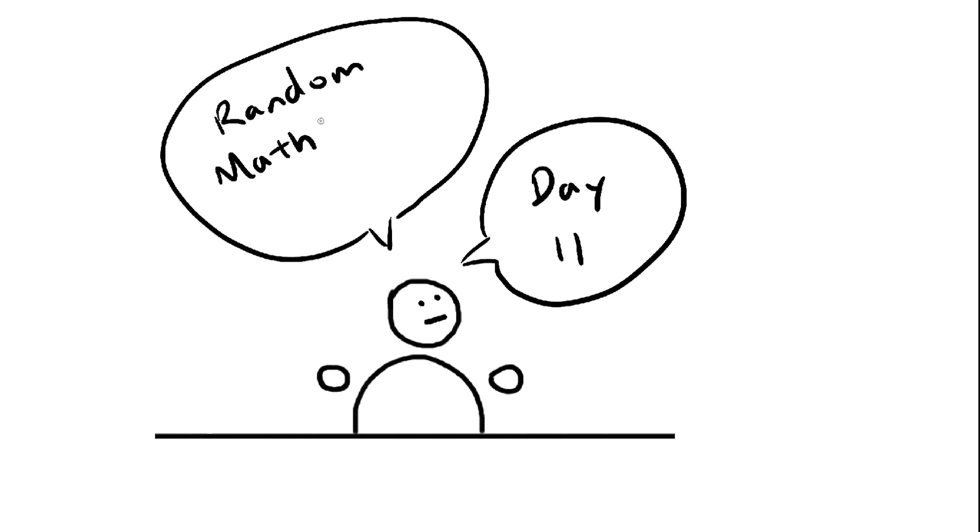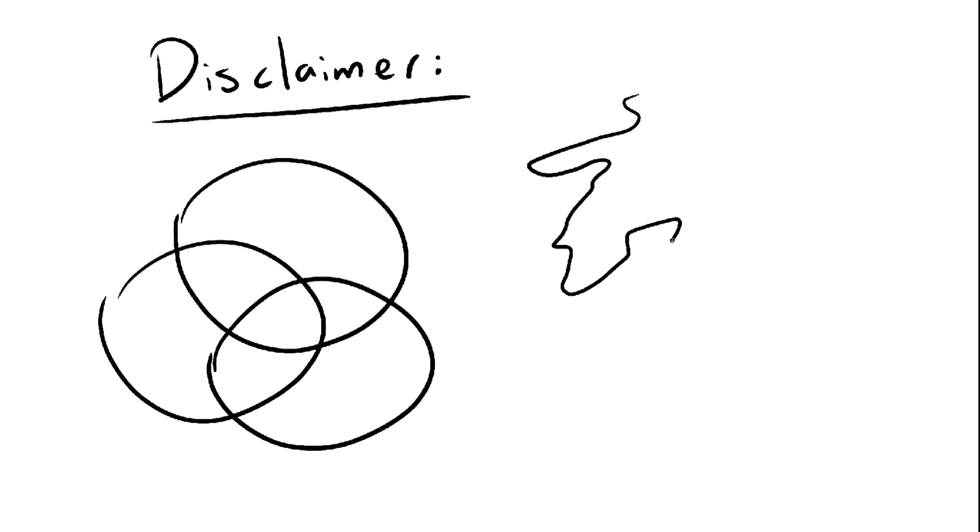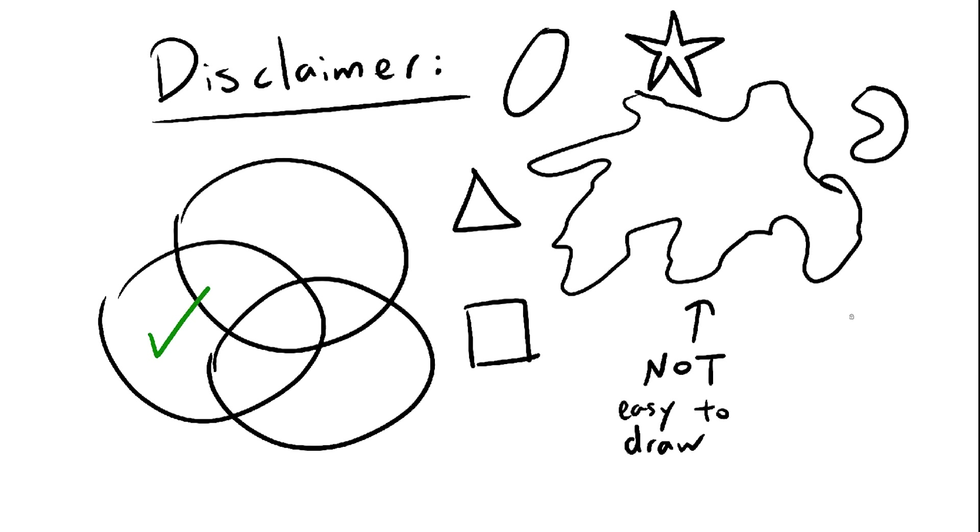Welcome back to day 11 of Random Math Stuff. Before we start the video, we use circles for Venn diagrams because they're easy to draw, so in that sense they're a good choice. But that doesn't discount from the fact that pretty much any other shape will be able to create more complex Venn diagrams than circles, which I think is hilarious. Let's just start the video.